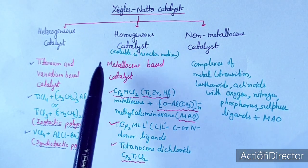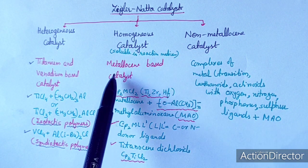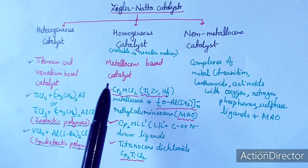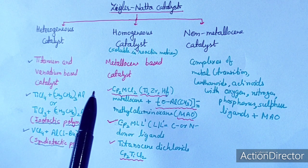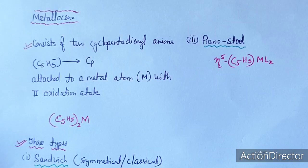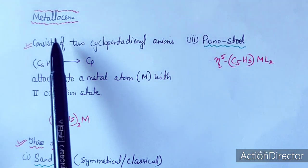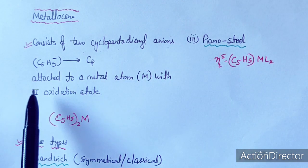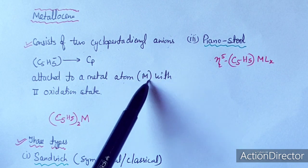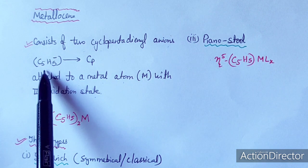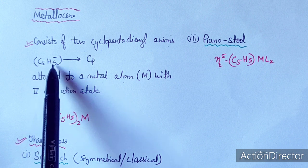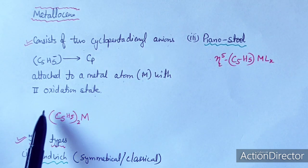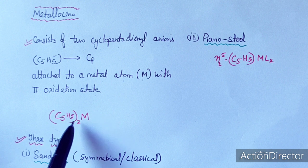The homogeneous Ziegler-Natta catalyst is generally soluble in the reaction medium and includes metallocene-based catalysts. Metallocenes consist of cyclopentadienyl anion C5H5 minus, written as Cp. When Cp is bonded to a metal, it is known as a metallocene. This is the general formula of metallocene.